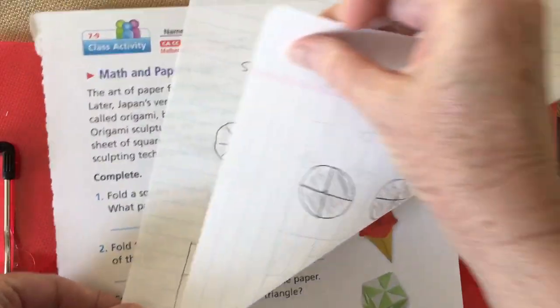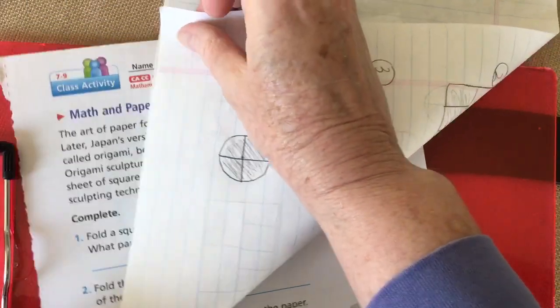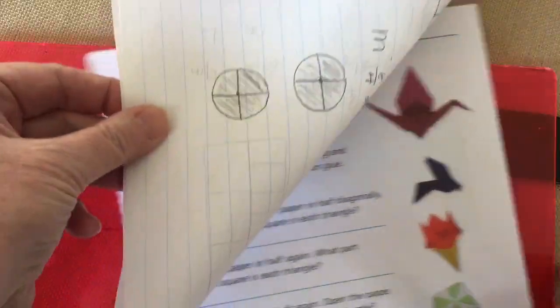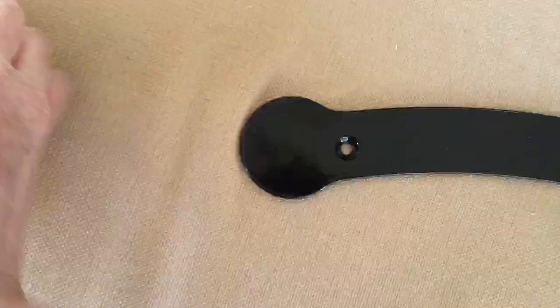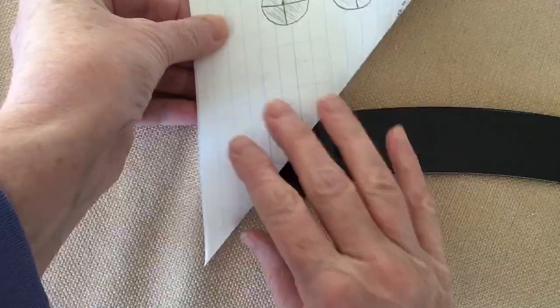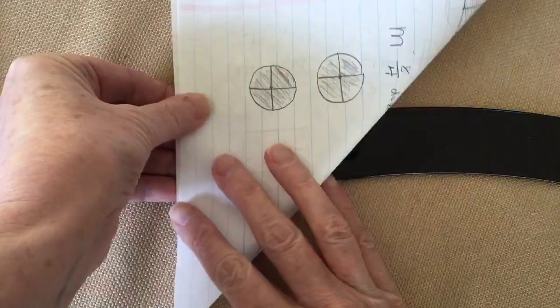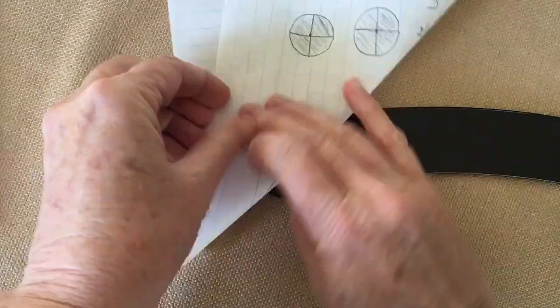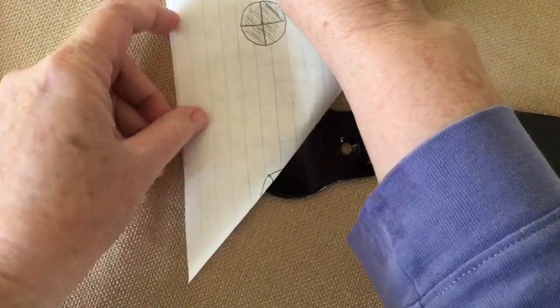You're going to take this bottom right and fold it up almost like a triangle. Let me get this out of the way. What you want is to line it up carefully.